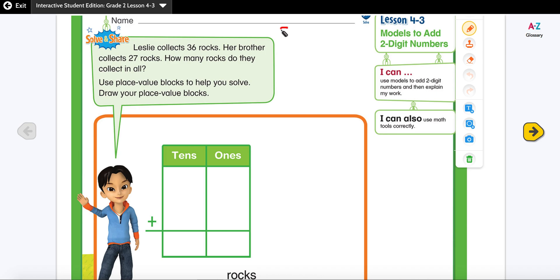Let's write it: C-U-B-E-S. So we are going to use our CUBES strategy to unlock the word problem. C stands for circle the key numbers.